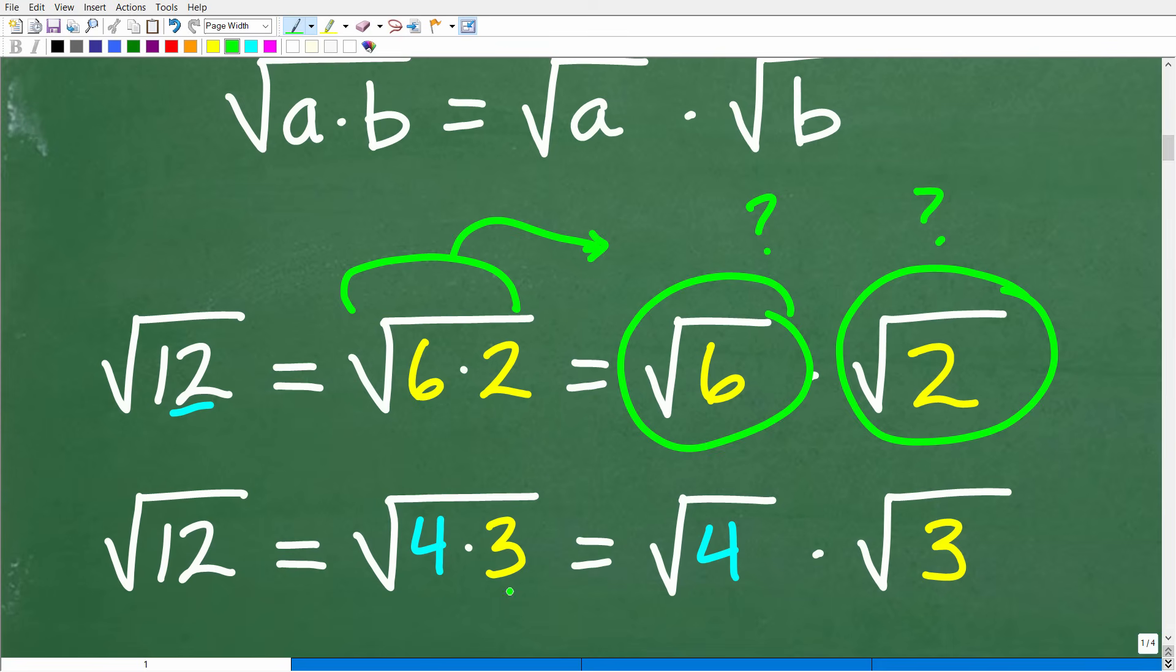So maybe we can think of the square root of 12 in terms of other factors of 12. How about 4 and 3? So 4 times 3 is 12. So the square root of 12 is equal to the square root of 4 times 3. So let's break up the square root of 4 times 3 as the square root of 4 times the square root of 3.